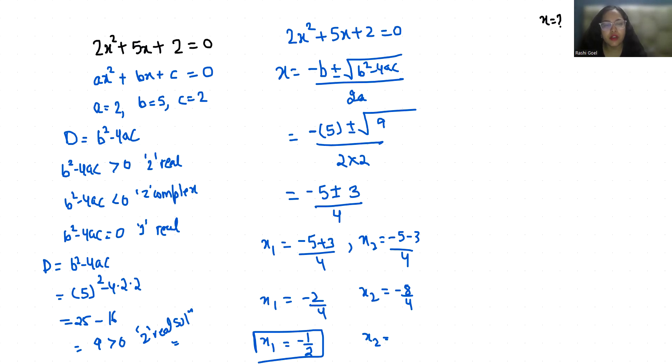So this is method 1 to find the roots. And method 2 is 2x² + 5x + 2 = 0. So I can write this 5x as 4x + x + 2 = 0.